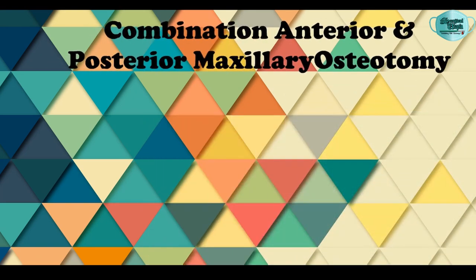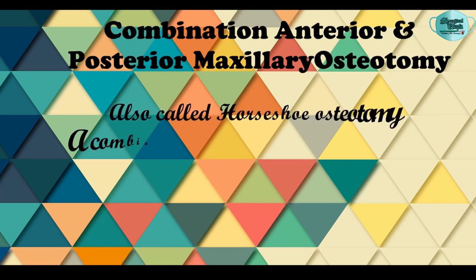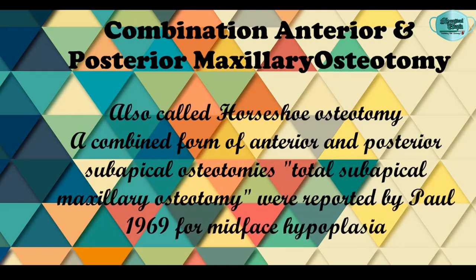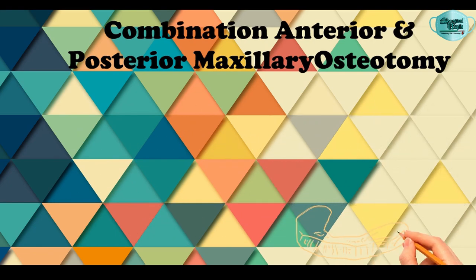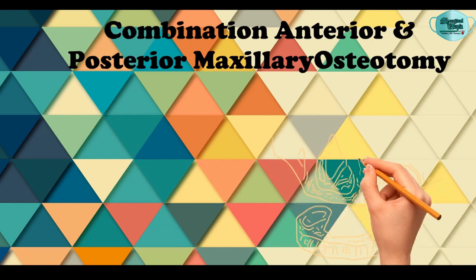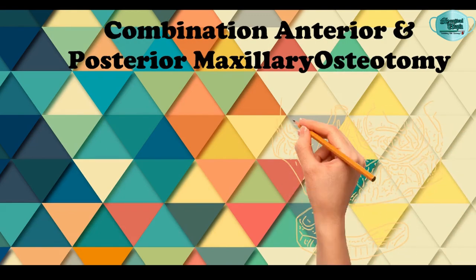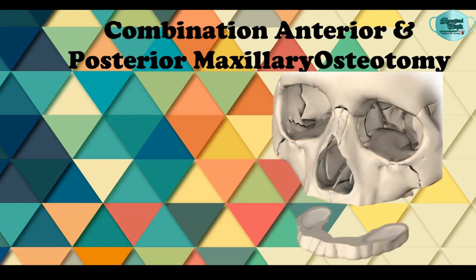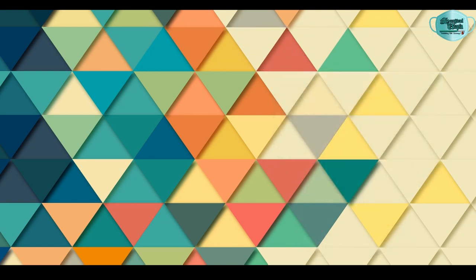It is worth mentioning that a combination of anterior and posterior maxillary osteotomy can also be done, called horseshoe osteotomy or total subapical maxillary osteotomy. It was described by Paul in 1969 for mid-face hyperplasia cases. In this procedure, a combined anterior and posterior subapical osteotomy creates a three-piece maxilla with the central nasal portion left undisturbed, through the use of palatal parasagittal osteotomies.